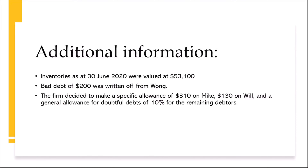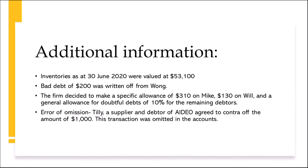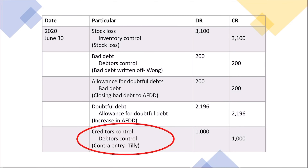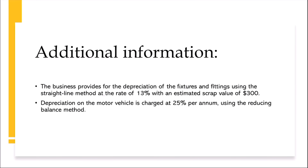Next, I noticed an error of omission where the correct entry was omitted in the accounts, so I recorded it into the General Journal where I debit CCA and credit DCA.